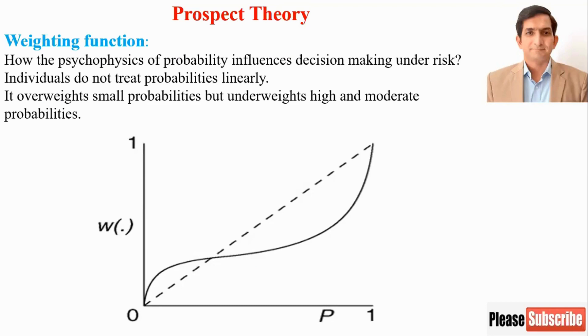Now I discuss weighting function. Weighting function is about how people deal with probabilities. Probability is between 0 and 1. If we tell people the probability of something, but they cannot accept it psychologically, the errors that people make are described by the weighting function.